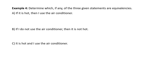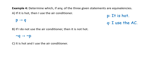Example — determine which, if any, of the three given statements are equivalencies. Statement A: 'If it is hot then I'll use the air conditioner.' Let P be 'it is hot' and Q be 'I'll use the air conditioner.' Symbolically, A is P right-arrow Q. Statement B: 'If I do not use the air conditioner then it is not hot,' which is not Q implies not P. Statement C: 'It is hot and I use the air conditioner,' symbolically P and Q.